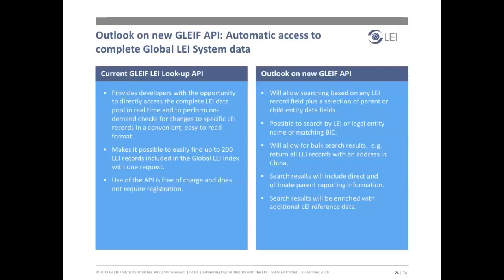Data users can quickly retrieve information on specific LEIs instead of having to download the entire file comprising the LEI population or manually search for individual records. The API can be used free of charge and registration is not needed. Further enhancements will be made to the API in 2019, with many additional features available. For example, searches for information based on any LEI record field plus a selection of parent or child entity data fields will be possible. It will also be possible to search by LEI, legal entity name, or matching BIC. Bulk search results will be allowed — for example, returning all LEI records with an address in China — and results will include direct and ultimate parent reporting information, enriched with additional LEI reference data.